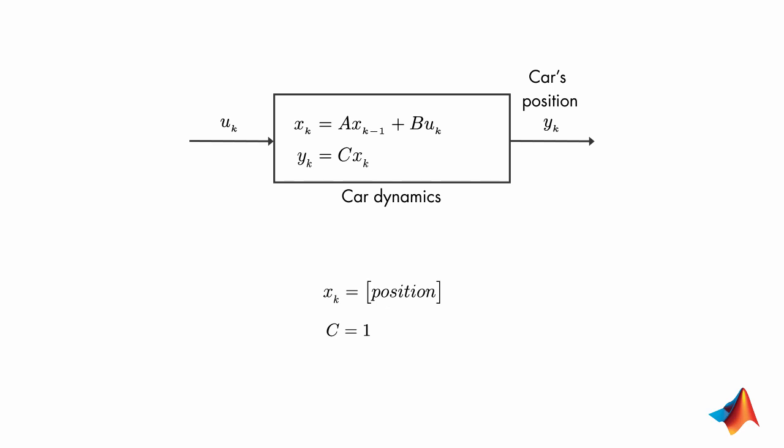We'll assume an overly simplistic system where the input to the car is the velocity. This system will have a single state, the car's position, and we're measuring this state so matrix C is equal to 1.